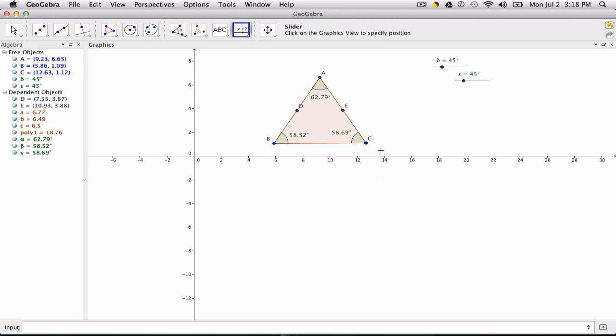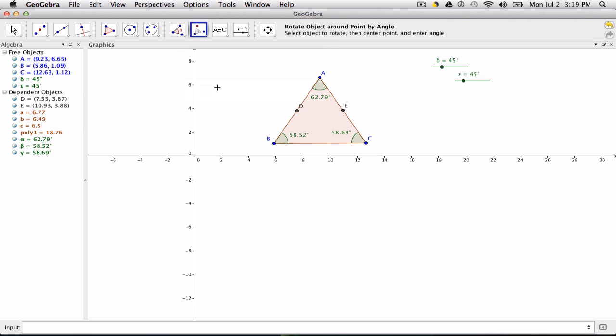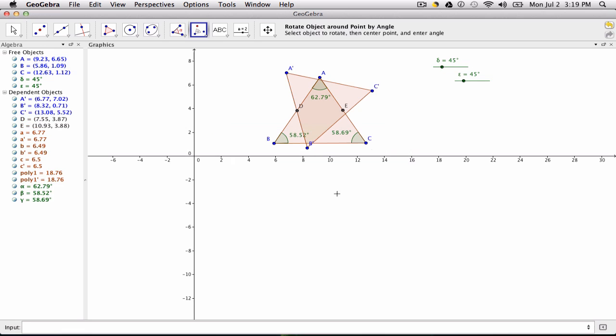So now what we want to do is rotate the triangle around the two midpoints by the angles that we just set up, these two angles over here. So to do that, I click my rotation tool, rotate object about a point, click my triangle, and then point D. I want to actually rotate this counterclockwise, click over here, and pick angle, the angle, the D angle, let's call it, up here, and click OK.